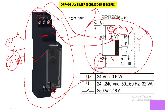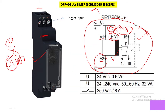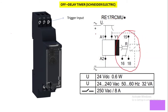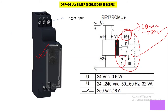Y1 terminal is actually the trigger input terminal. Now if we talk about contact details — this timer has a relay, a timer relay. Terminal 15 is actually the common terminal.